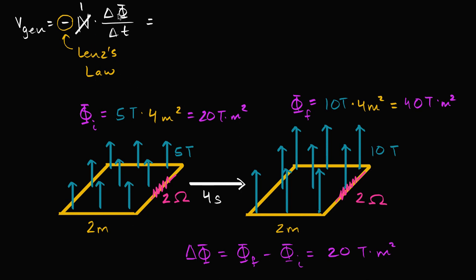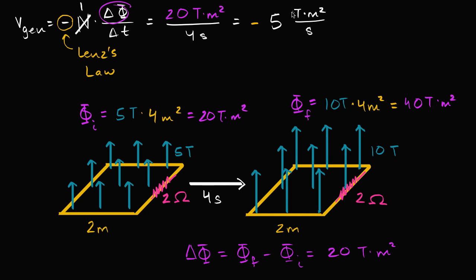The real key here, at least for this example, is to find our change in flux over change in time — our average rate of change of flux. This is going to be 20 tesla meters squared — our change in flux — divided by our change in time, which is four seconds. That equals five tesla meters squared per second, which turns out to be a volt. So we get negative five volts.